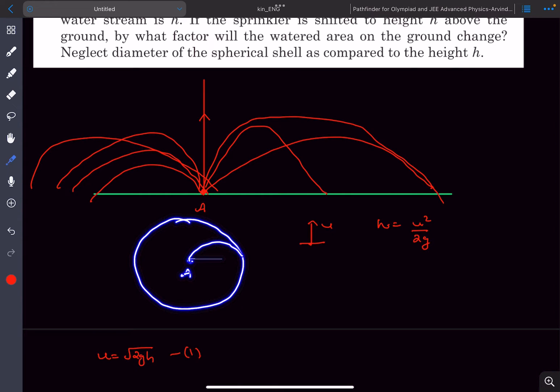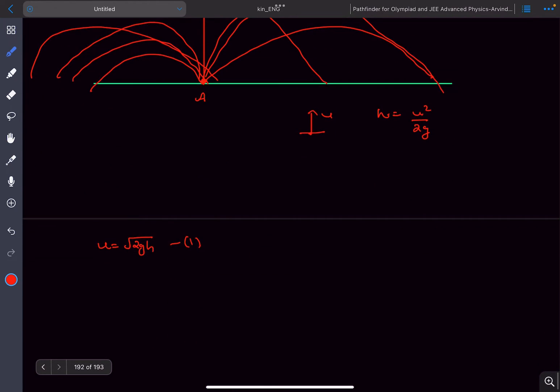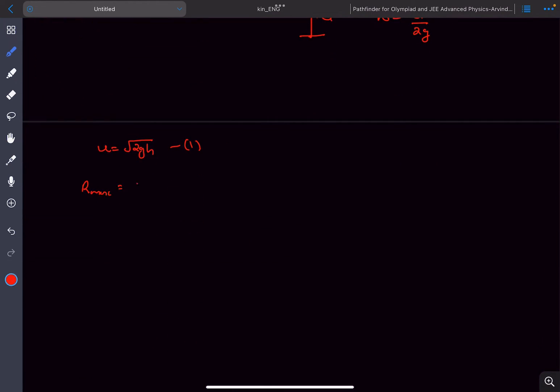The r_max of this projectile motion is given by the formula u²/g, because the formula for range is u²sin(2θ)/g.